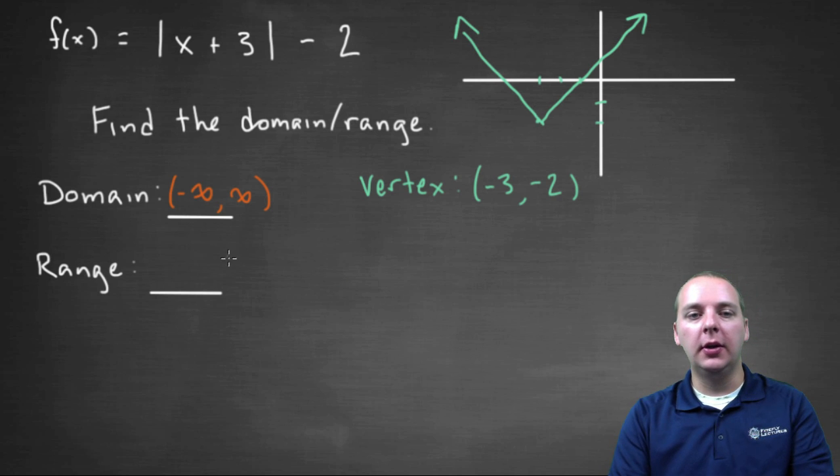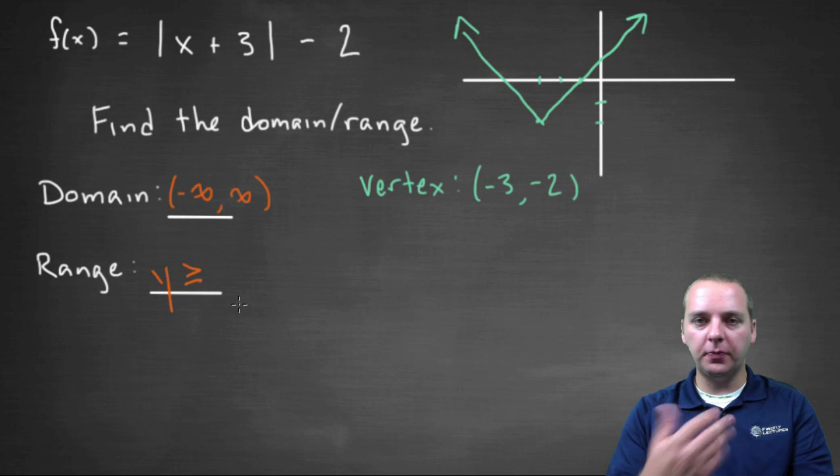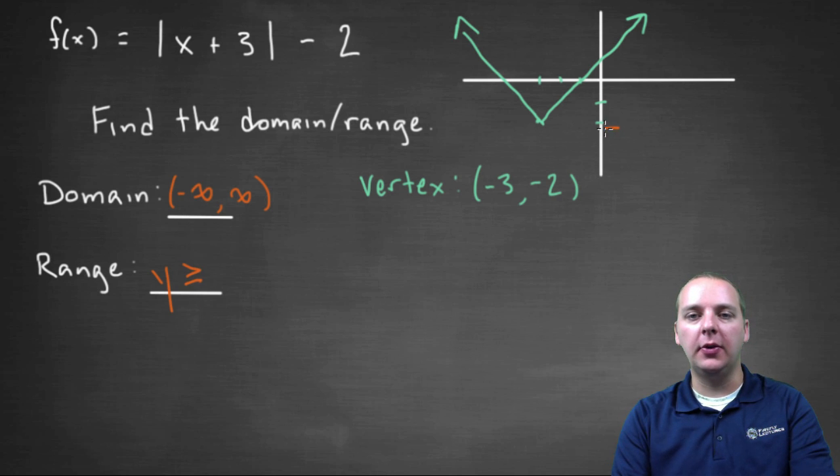Ours opens upward. So ours will be Y greater than or equal to some certain Y value. If you look at the graph, it looks like it's higher than about this Y value. Now, where is this Y value right here? Well, notice that's just dictated by the vertex.